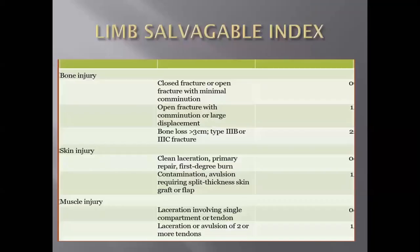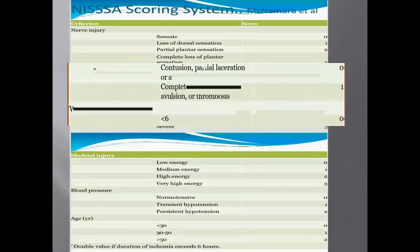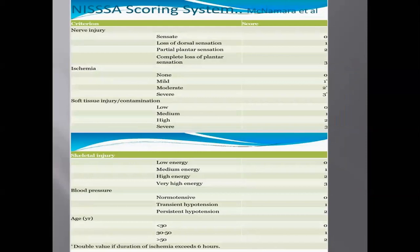Then the Limb Salvage Index (LSI) — when the scoring is less than 6, as per limb salvage index, it is salvageable. In the NISSSA scoring system, which is a modification of the MESS score, nerve injury is added as an additional component, and soft tissue and skeletal components are separately assessed.